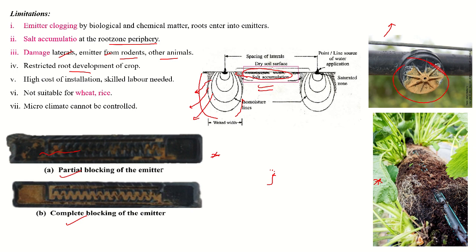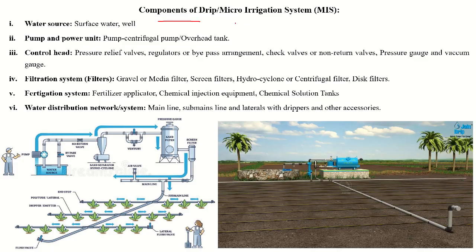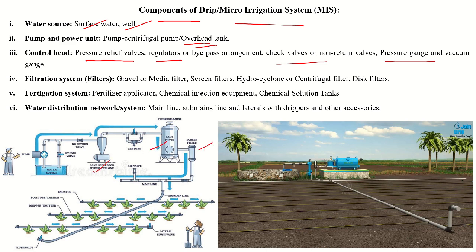Damage to laterals and emitters from rodents and animals is possible. Restricted root development occurs because water is applied only to the root zone, so roots do not grow longer or deeper. High initial cost and skilled labor are required. The drip system is not suitable for rice, wheat, and microclimate cannot be controlled. The drip system consists of a water source — surface water or groundwater — a pump such as a centrifugal or submersible pump, or an overhead tank. It also includes filters, control head, pressure regulators, check valves, pressure gauges, and a filtration unit such as gravel filter, sand filter, screen filter, or disc filter, as well as a fertigation system with venturimeter or fertilizer tanks.